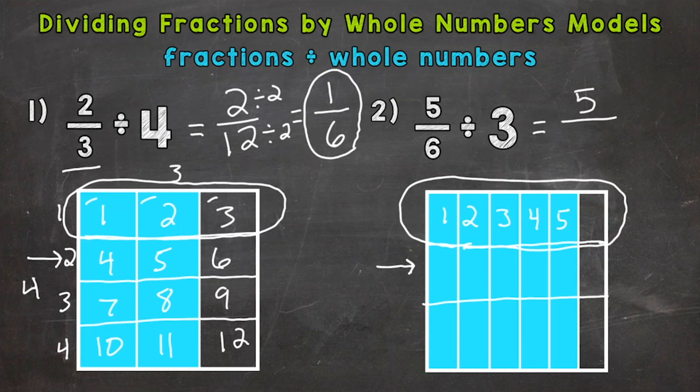Now we need to see the total pieces in that square. Well, we have a three by six. So three times six gives us an answer of 18 total pieces there. Remember, you can do an array and multiply or count them individually. So five-eighteenths is our answer.